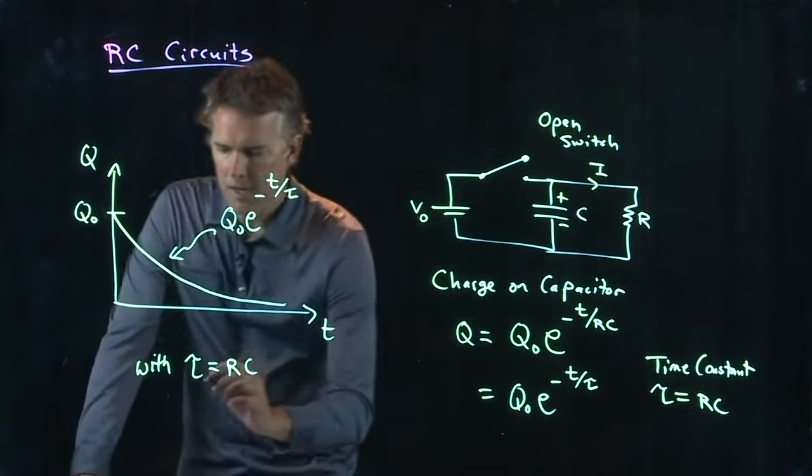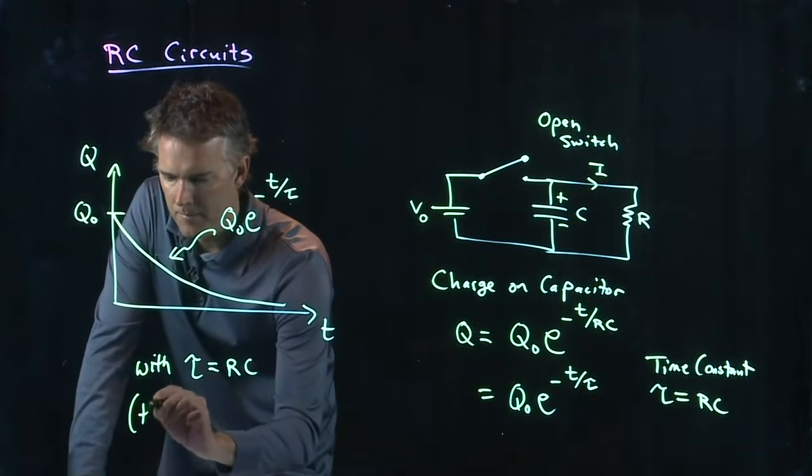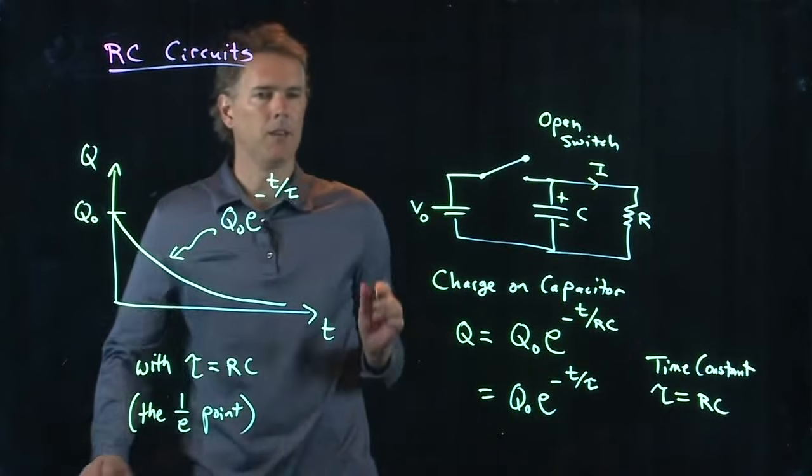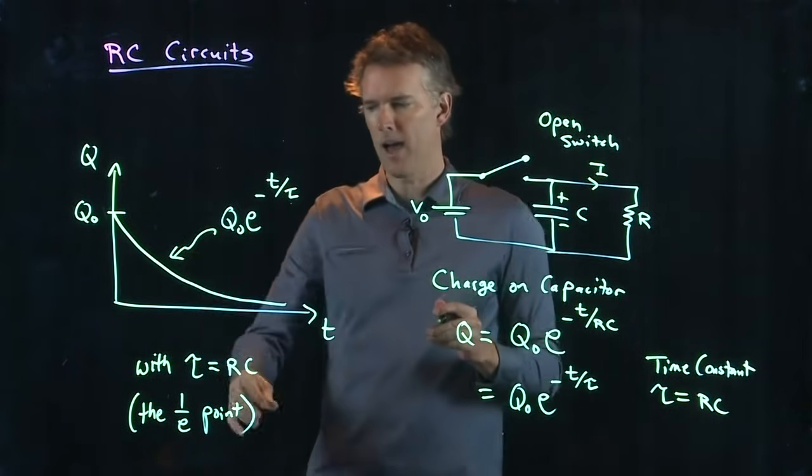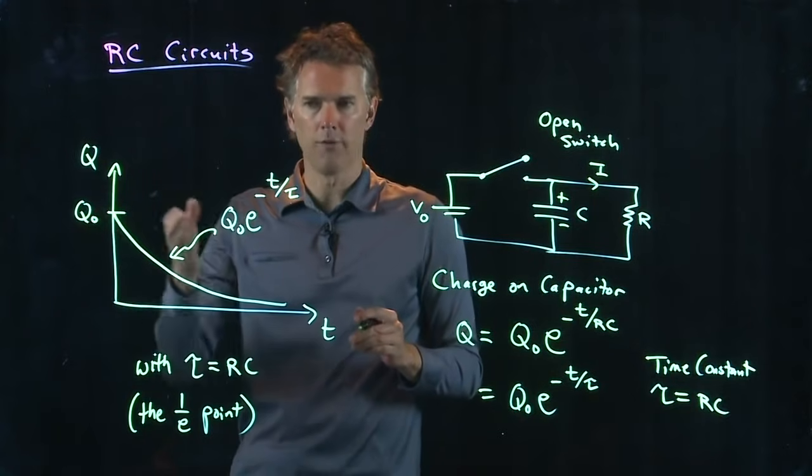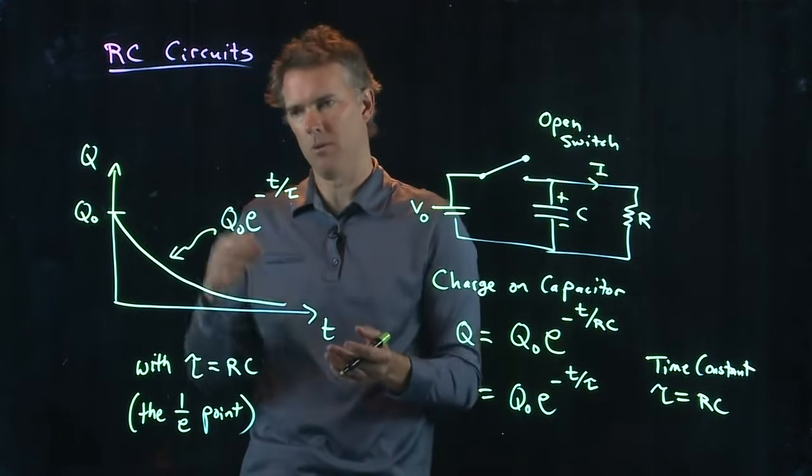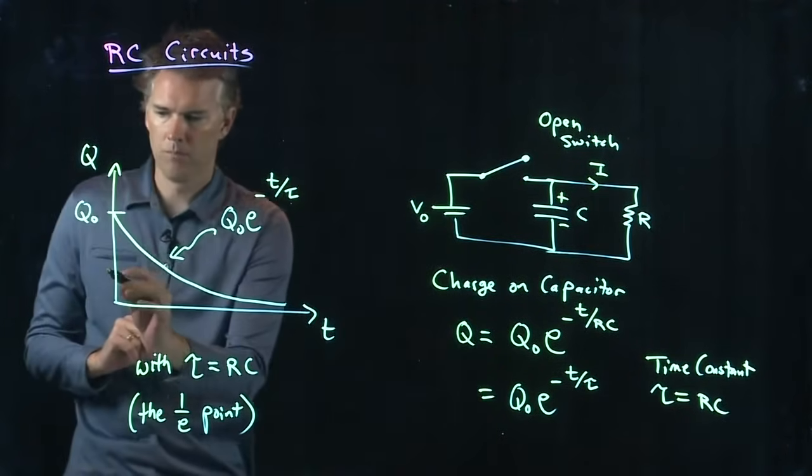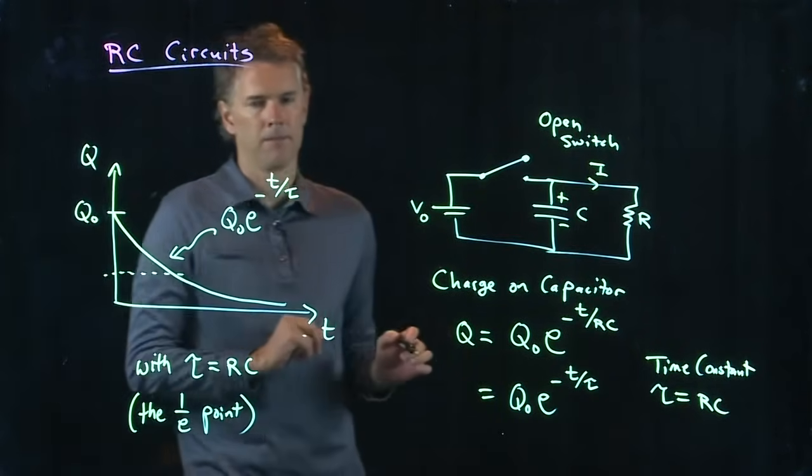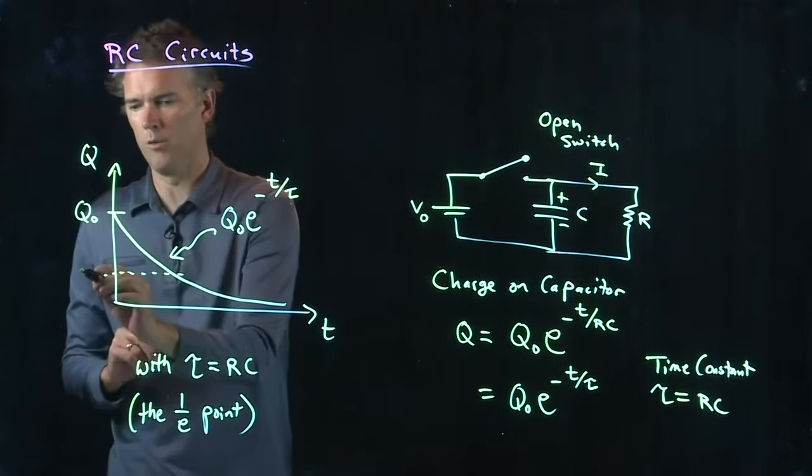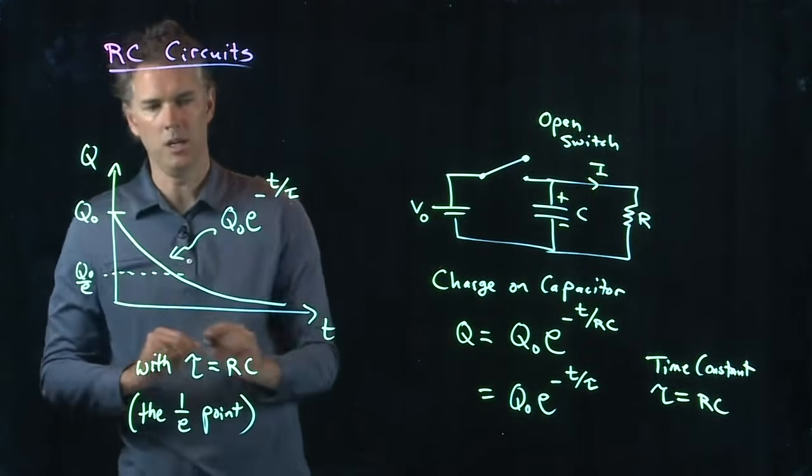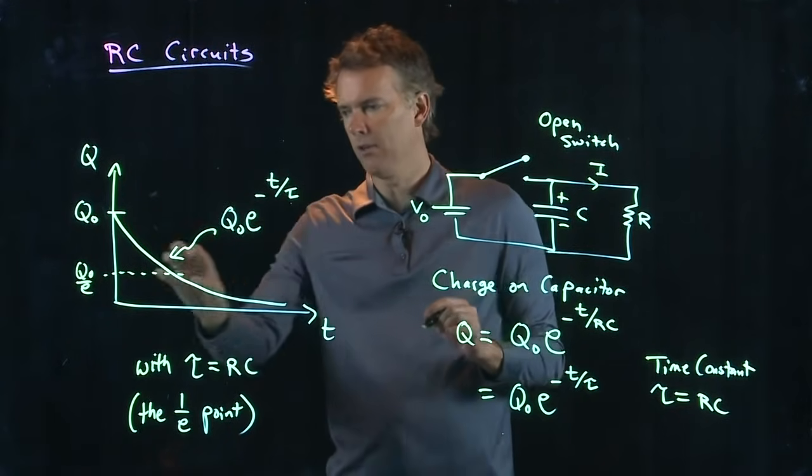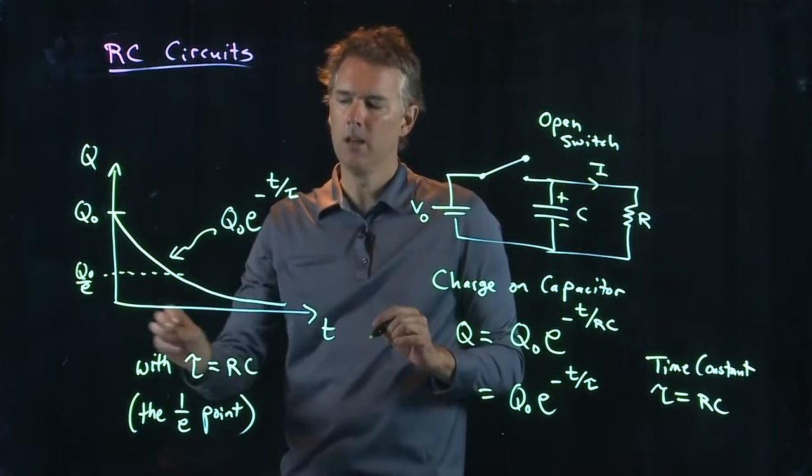Tau is the 1 over E point. It's how long does it take for that charge to drop to 1 over E its value, right? E is the natural number, 2.7, blah, blah, blah, blah, blah, blah. 1 over E is going to be somewhere about there. Okay, this is the 1 over E point, Q naught over E. And you can see, if I put T equals Tau here, I get E to the minus 1. And so that becomes a Q naught over E. That's the 1 over E point.